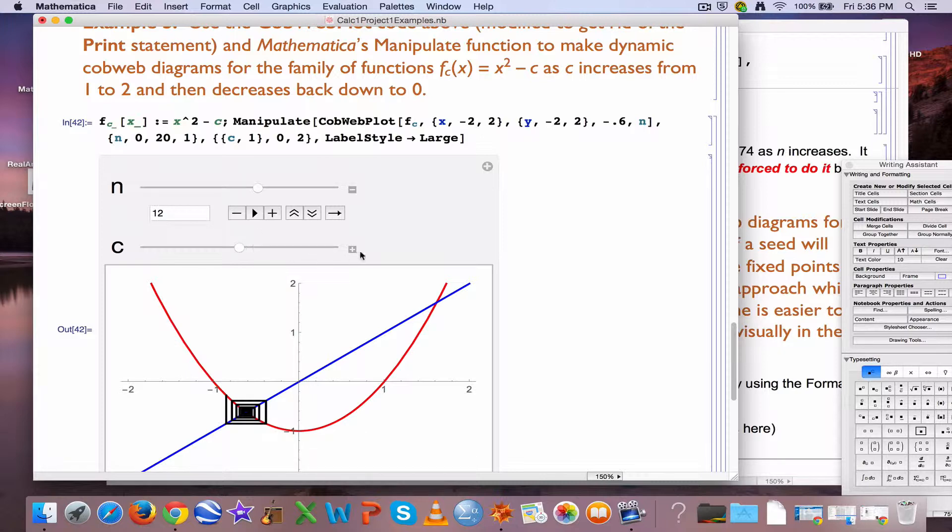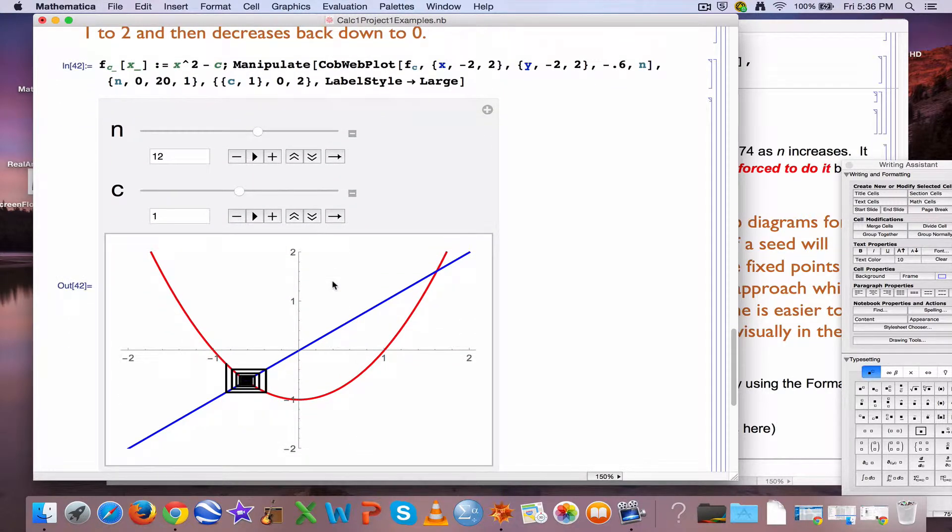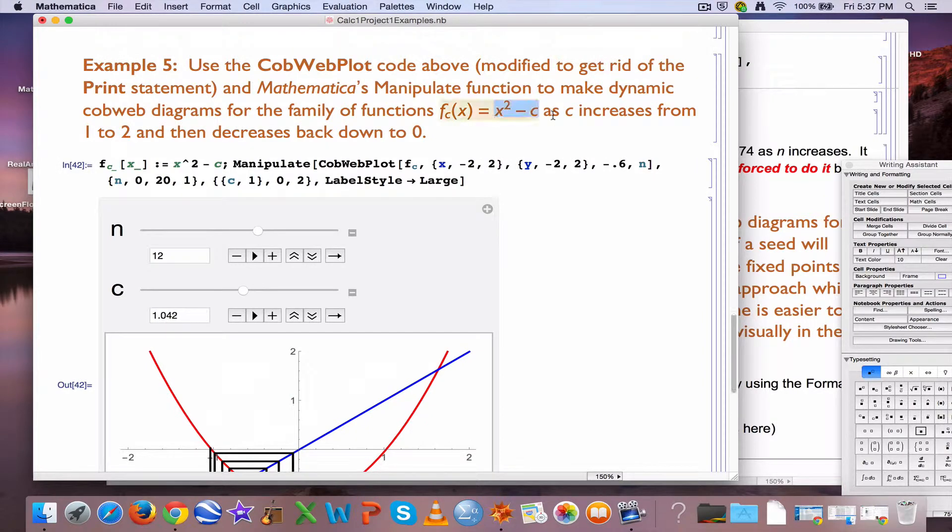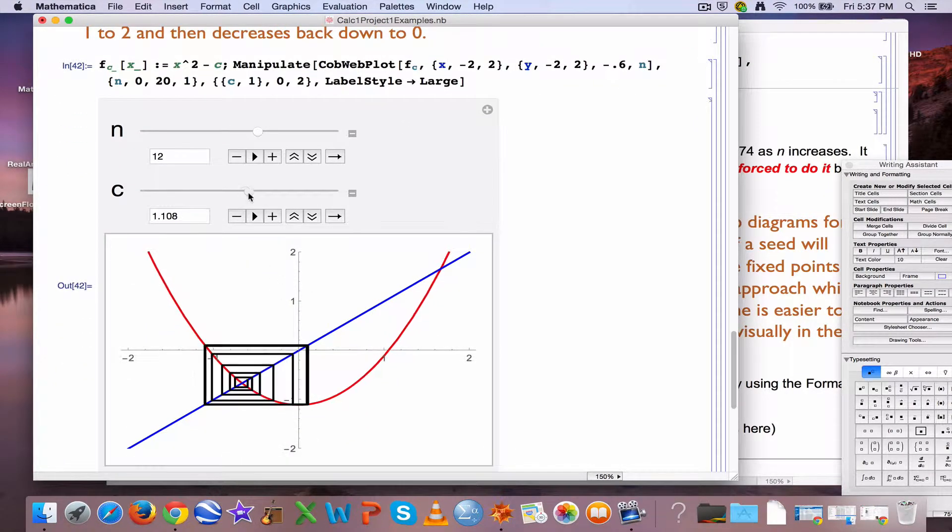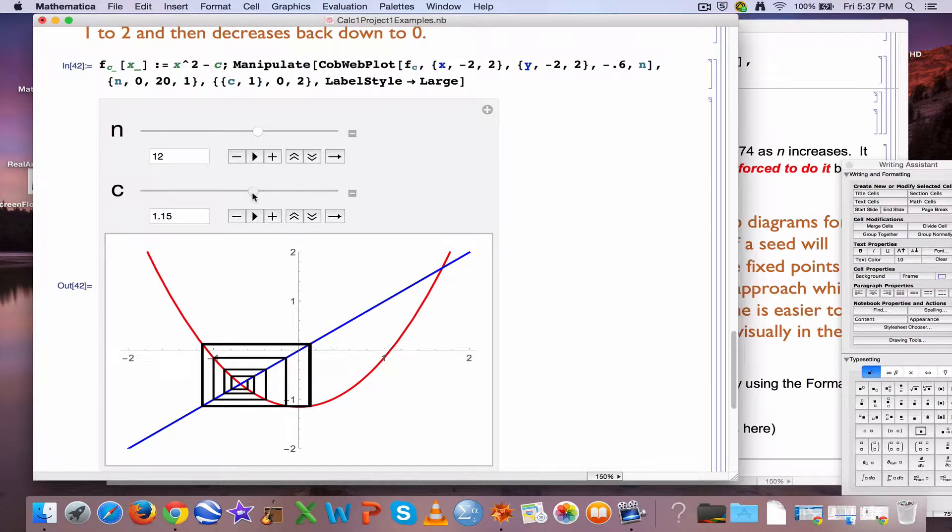But now, I can also change c to get different behaviors for the iterates. What if I increase c a little bit? What happens? I get a different behavior for the iterates, but it's still somewhat qualitatively similar, we're still moving away from that fixed point in a spiraling way. But as c continues to increase, making this graph shift down, this red graph, because I'm subtracting c in this formula, you end up seeing something radically different.